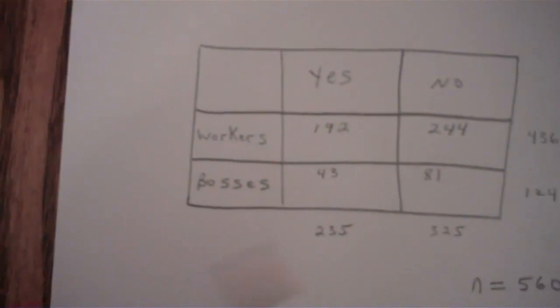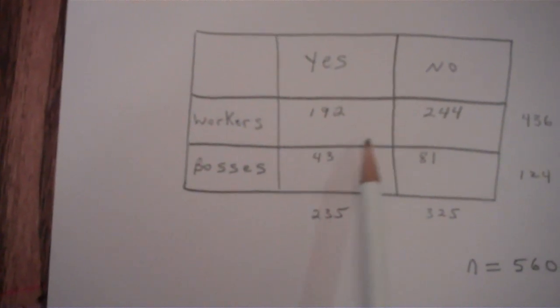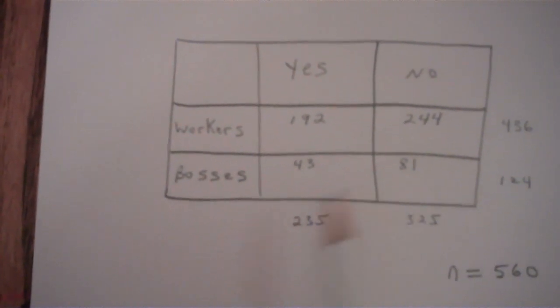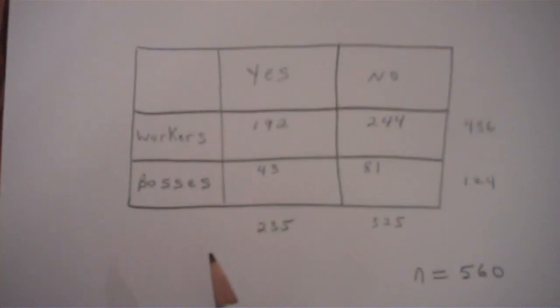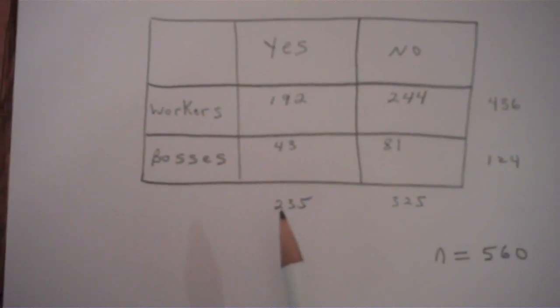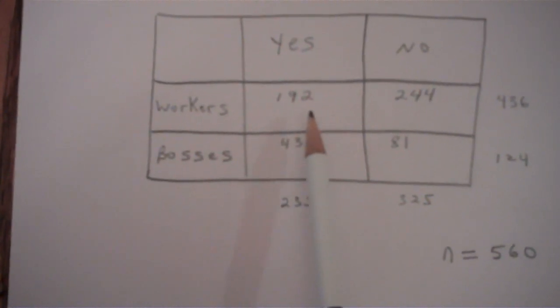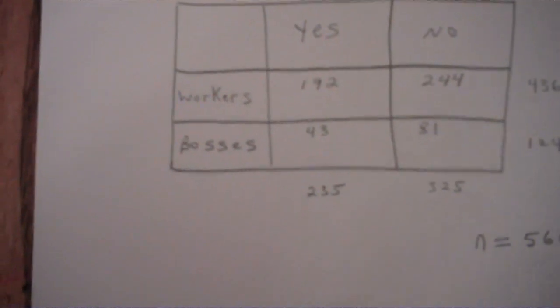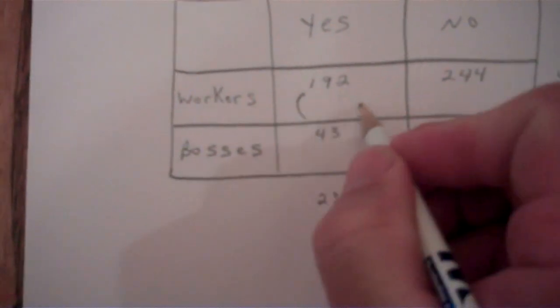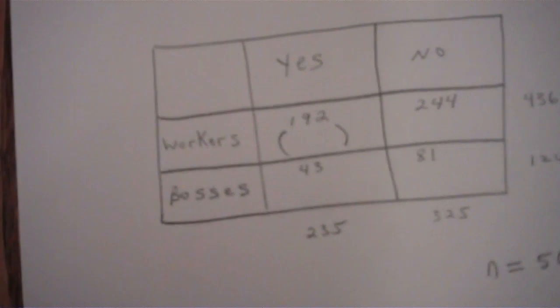What we want to do is one cell—we have one, two, three, four cells—and we're going to do the expected frequencies for one cell at a time. So we're going to start here for this cell, and that's going to be, we're going to put that expected frequency in those parentheses.